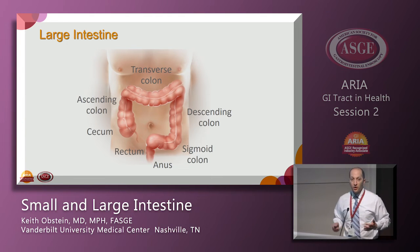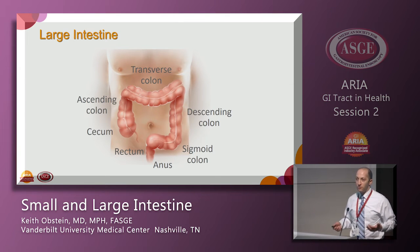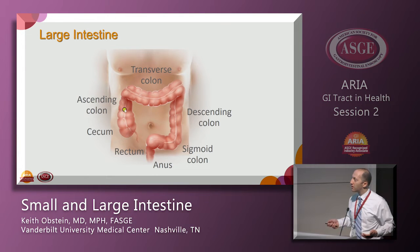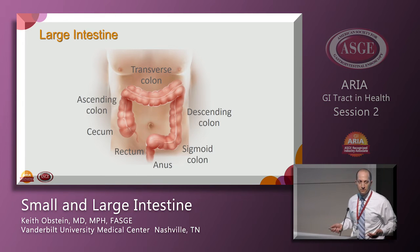When talking about segments of the colon, you might hear people talk about the right colon, transverse colon, and left colon. The right colon runs from the cecum all the way up the ascending colon to the hepatic flexure. The left colon starts at the splenic flexure and moves all the way down to the anus and rectum.